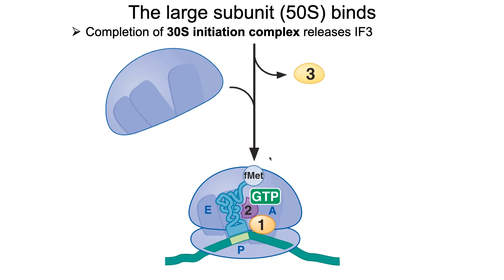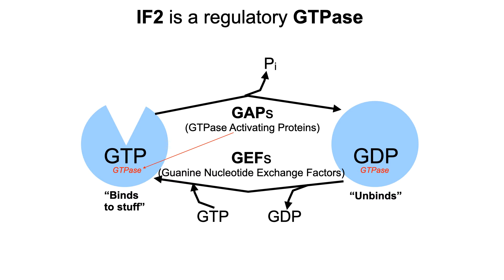Once we have the fMet-tRNA bound to the IF2-GTP, IF3 is released, and that allows for the large ribosomal subunit to bind to this complex. Now it's time to talk about what a regulatory GTPase is.